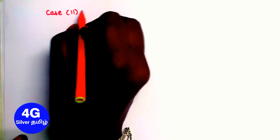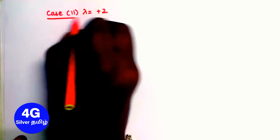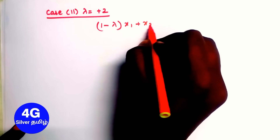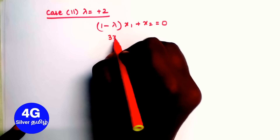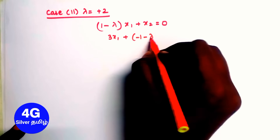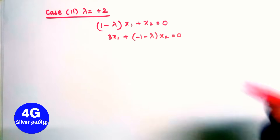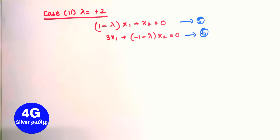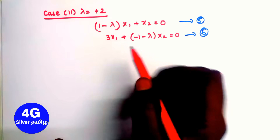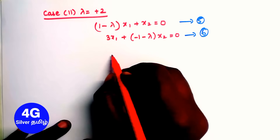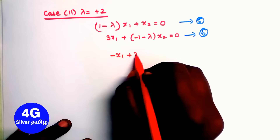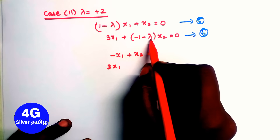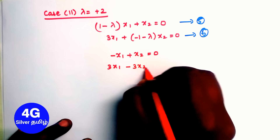Case 2: lambda equals plus 2. Using the same equations with lambda equals 2: equation 1 gives (1 minus 2) x1 plus x2 equals 0, so minus x1 plus x2 equals 0. Equation 2 gives 3x1 plus (-1 minus 2) x2 equals 0, so 3x1 minus 3x2 equals 0.